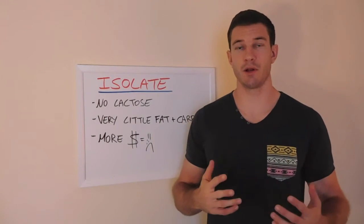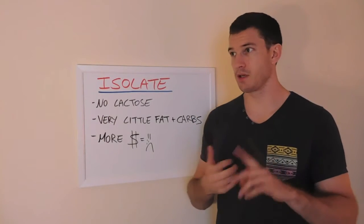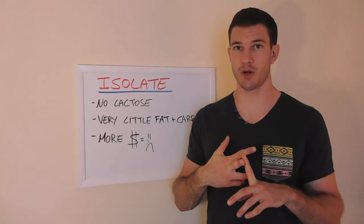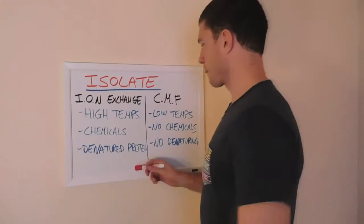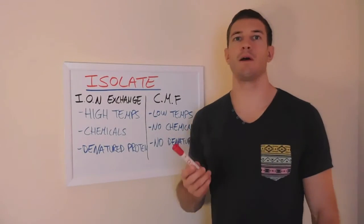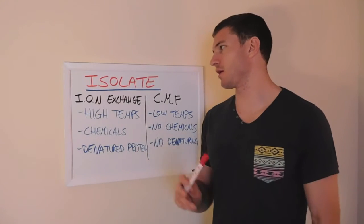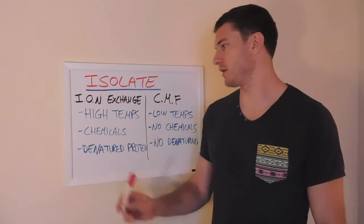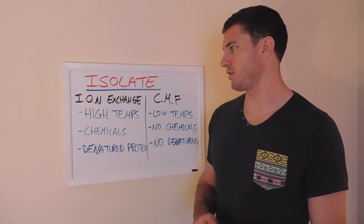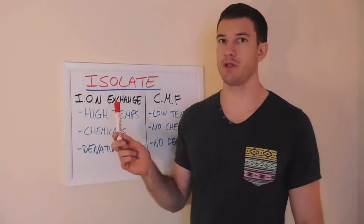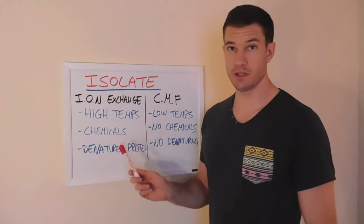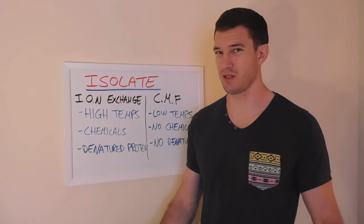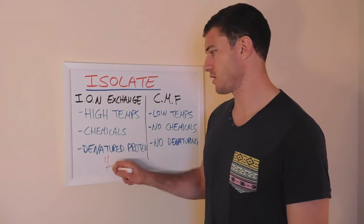The two methods of filtration that I'm going to talk about today, one is going to be ion exchange and the other one is cross flow microfiltration. The two most popular methods that companies use to filter their proteins, one is ion exchange, which is done at high temperatures, very high temperatures. It does use chemicals and it does denature the protein, which isn't very good. So sad face.